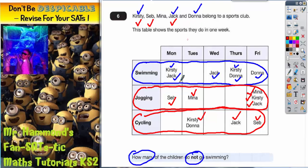One last person to check. Donna. Is Donna on the jogging row? No, she's not. Now if she's not on the jogging row, that's automatically going to mean that she's not doing both of them. So I can't tick Donna.